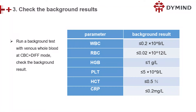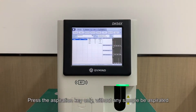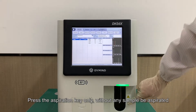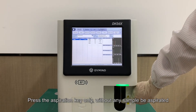Step 3: Check the background result. Run 3 tests to check whether the background is normal or not. Press the Aspiration key only, without any sample being aspirated.